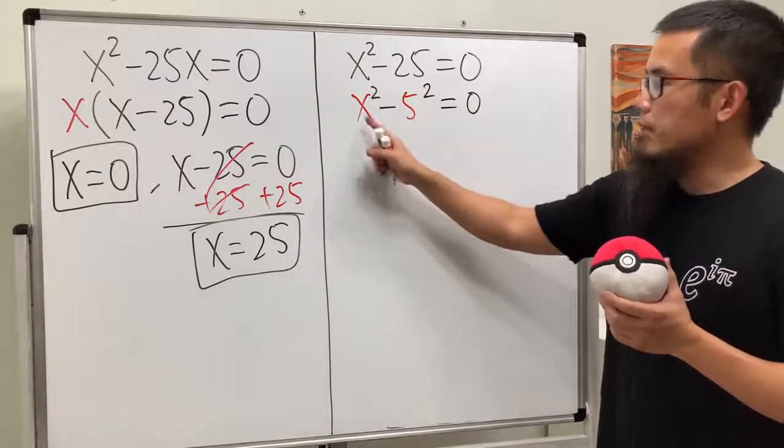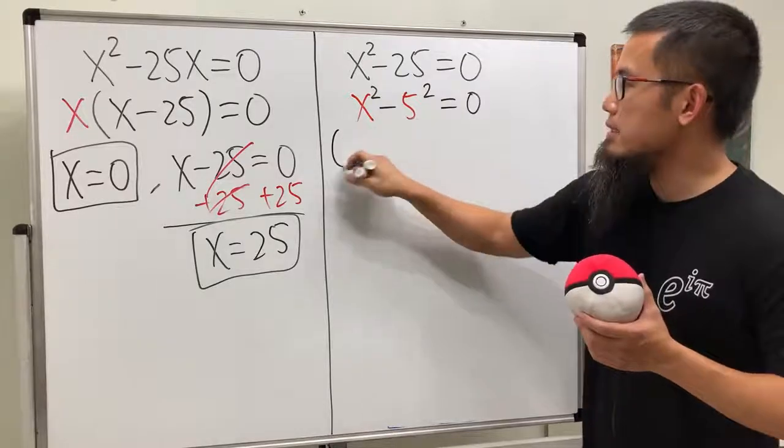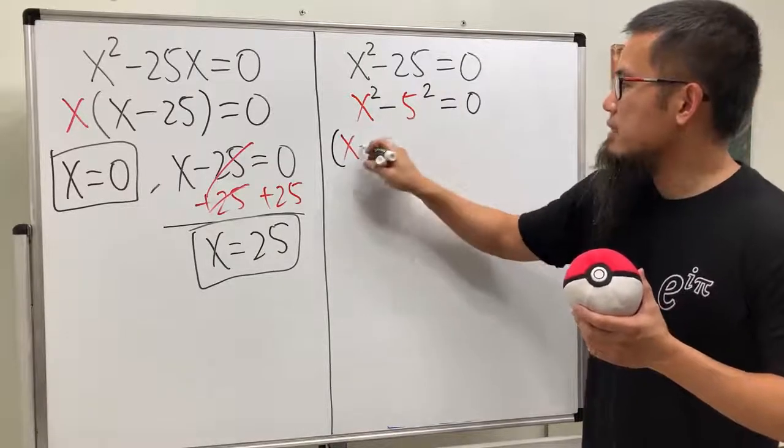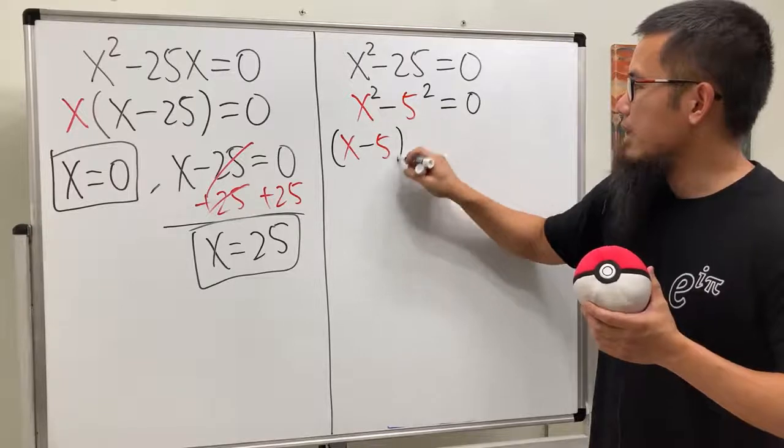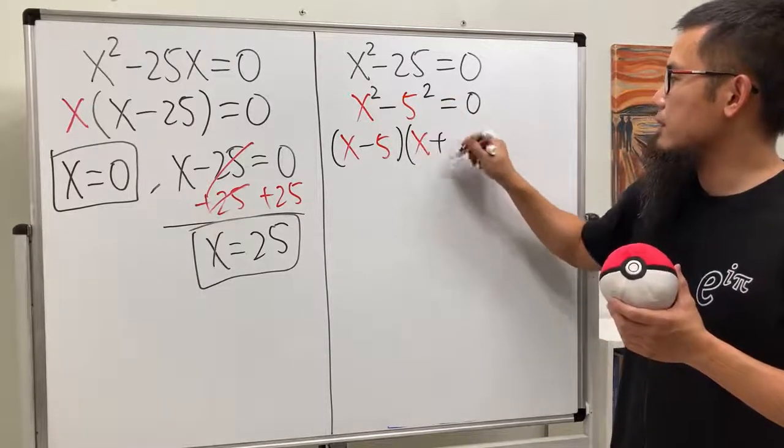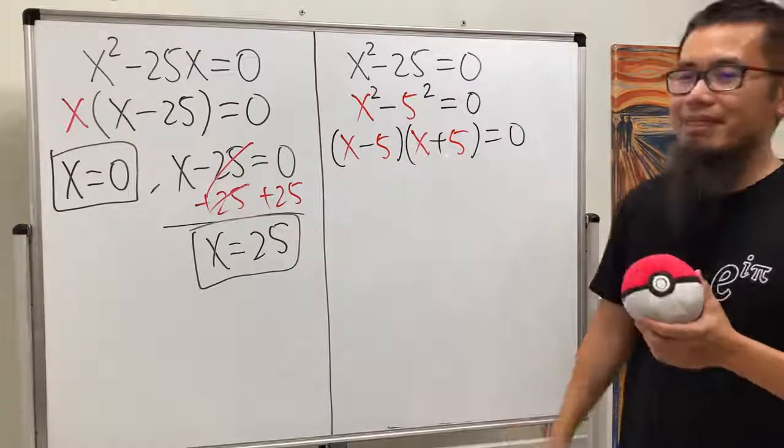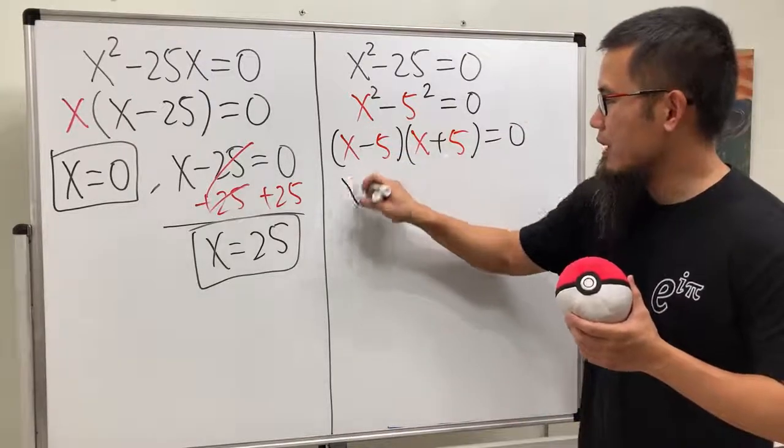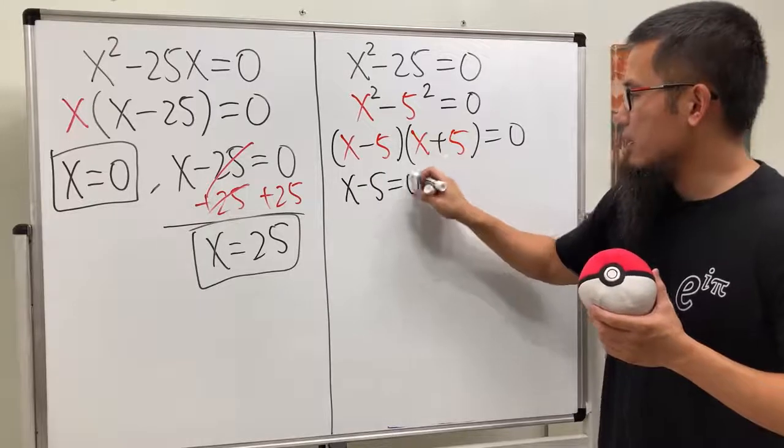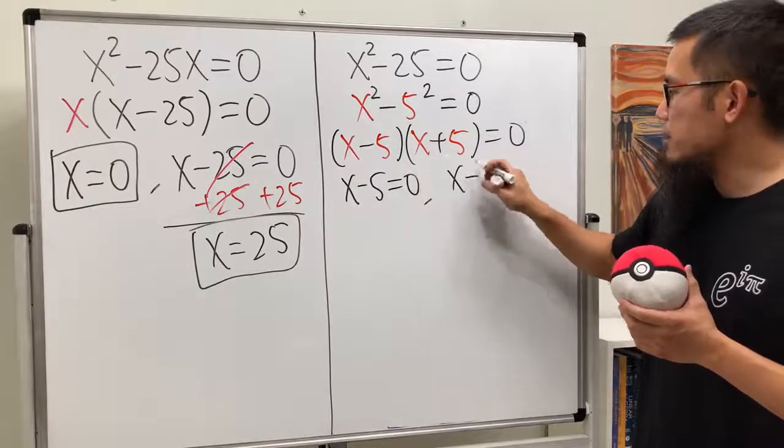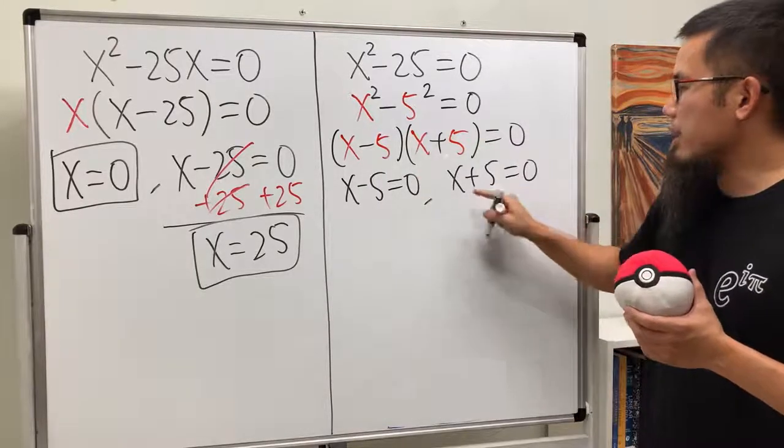When we have a difference of two squares, we can factor the L as x minus 5 times x plus 5. You just change the minus and also the plus right here, that's all, right? And then for this, we can just make the first factor, x minus 5, make it equal to 0, and then the other one, x plus 5, go ahead and put that as 0.